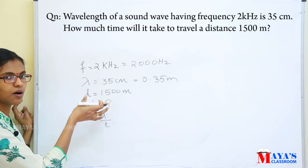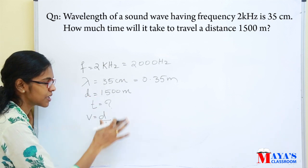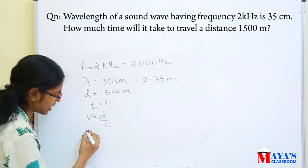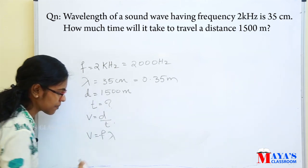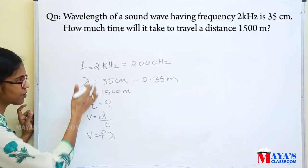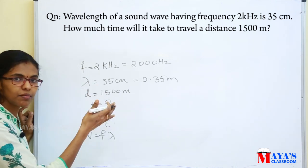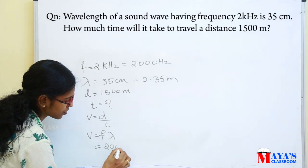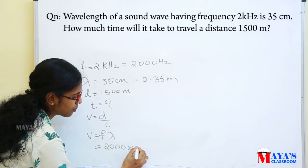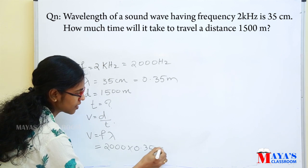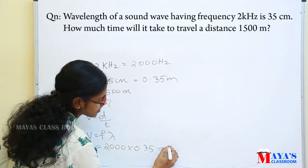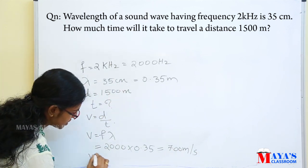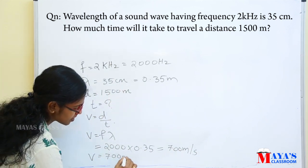We first find the speed. Speed equals F times lambda. The frequency is 2000 Hz, and lambda is 0.35 meters. Multiplying gives 700 meters per second. So V is equal to 700 meters per second.